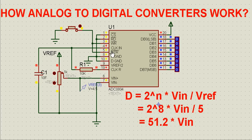For the conversion to start, the chip select signal must be grounded or at low state, and the write pin should go from low to high. Right now it's low. As you can see, this button is on so the write pin is grounded, so even though I'm changing the analog input voltage there's no change in the output — because the write pin should go from low to high for the conversion process to start.